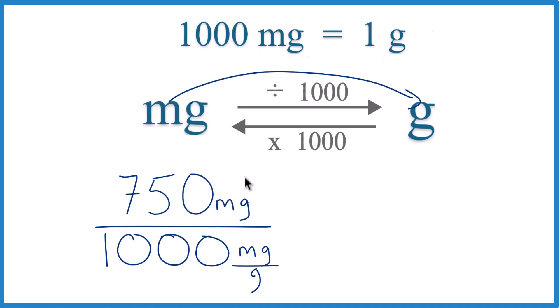But take a look at the units because we were given 750 milligrams. We're dividing it by 1,000 milligrams per gram. That's from the conversion factor. So milligrams cancel out. We're left with grams. That's what we're looking for.